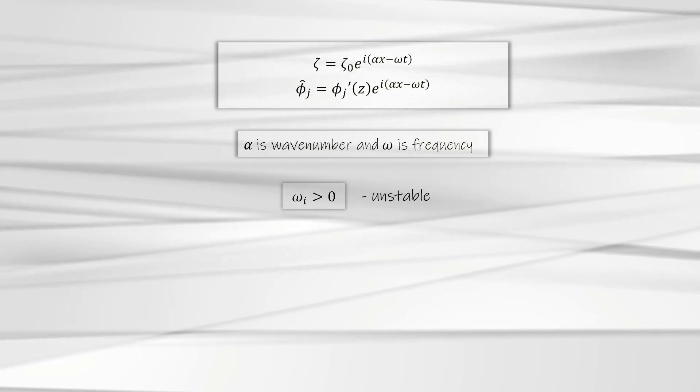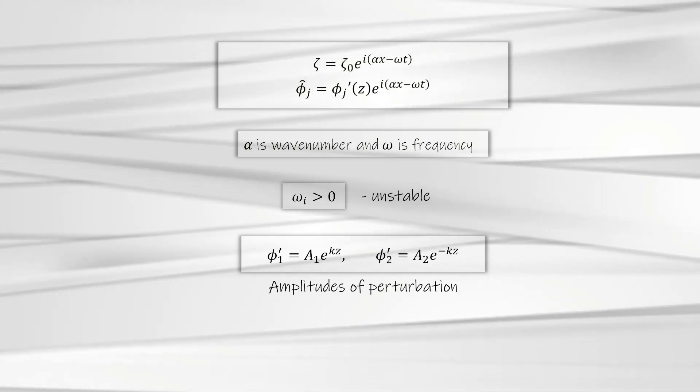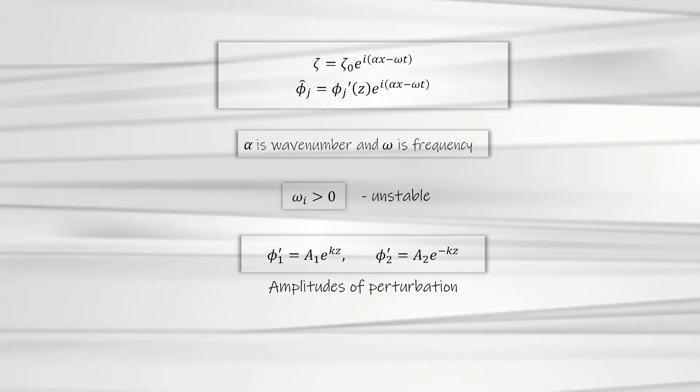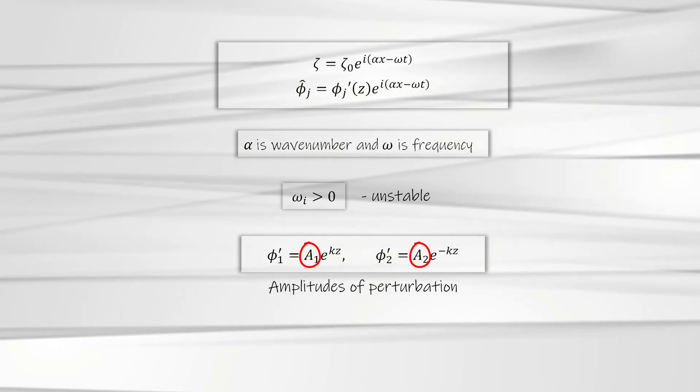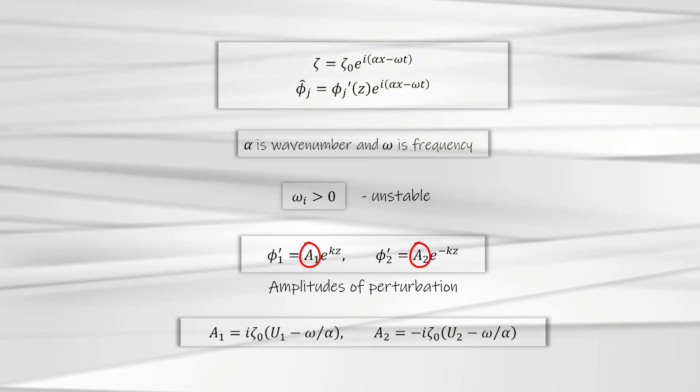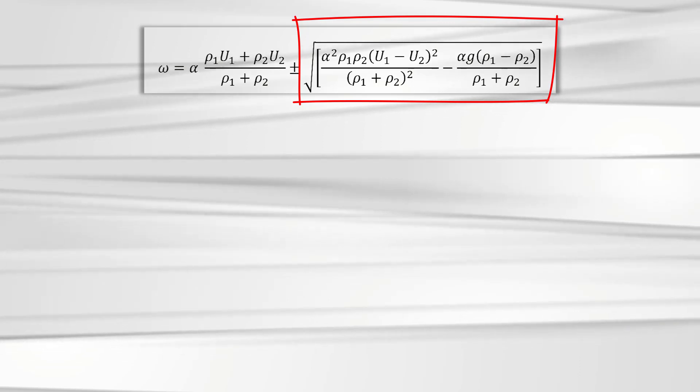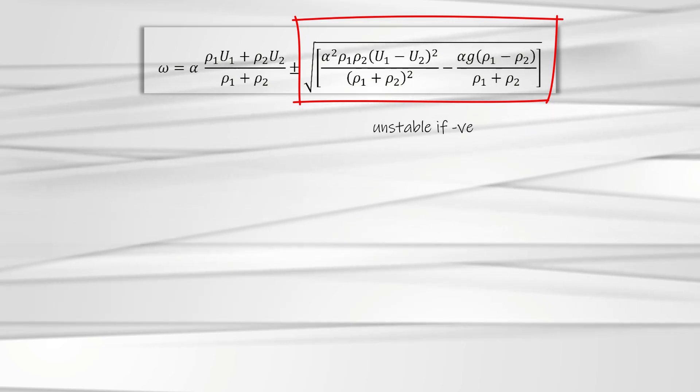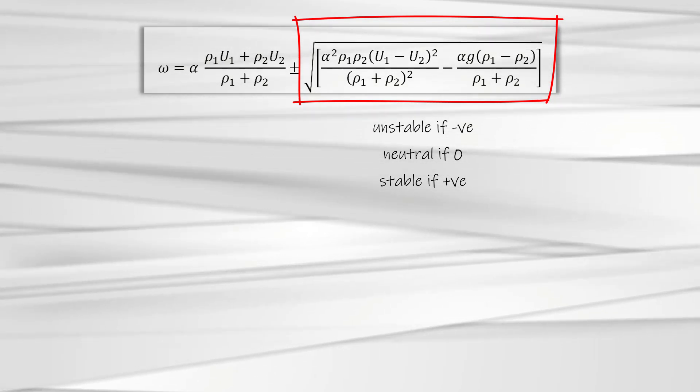If we substitute this perturbation in the Laplace equation and employ the far-field boundary condition, we will obtain the amplitudes of perturbation as shown here. Using these amplitudes and the interface kinematic condition, we can extract the values of the unknown quantities. These relations are shown here. Substituting the perturbations into the dynamic condition and extracting the roots of the subsequent quadratic equation, we will obtain the eigenvalues of this system. The stability of the fluid system is dependent on the value of the highlighted term. The disturbance is unstable if the value is negative, neutral if the value is zero and stable if the value is positive. Therefore, the unstable condition is given by the relation shown here.